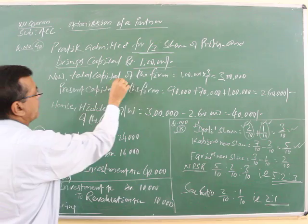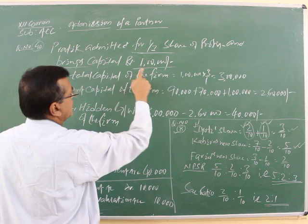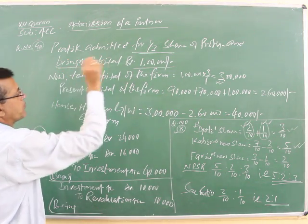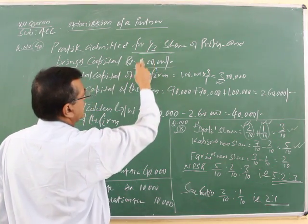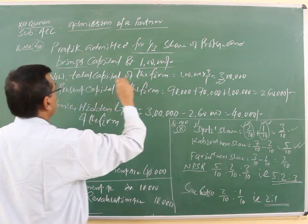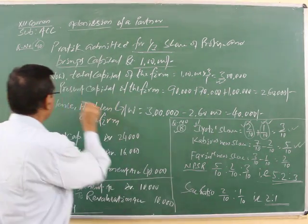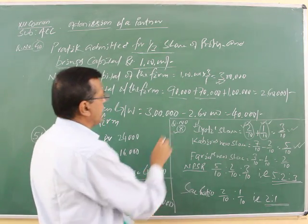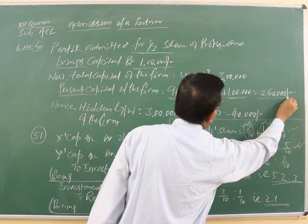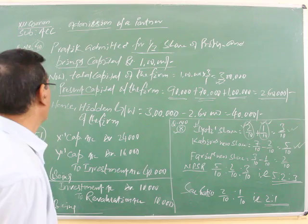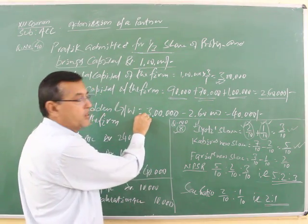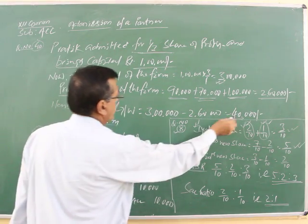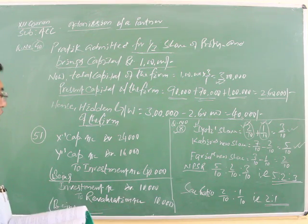The question asks: what should be the total capital of the firm? Since Pratik is admitted for 1 by 3 share and brings 1 lakh, the total capital of the firm can be calculated. The present capital of the firm is 90,000 of Bina plus 70,000 of Naman plus 1 lakh of Pratik. After subtracting the present capital from the calculated total, the hidden goodwill of the firm comes to 30,000.